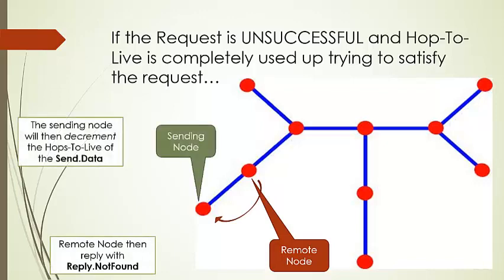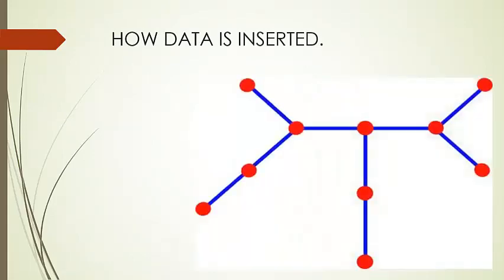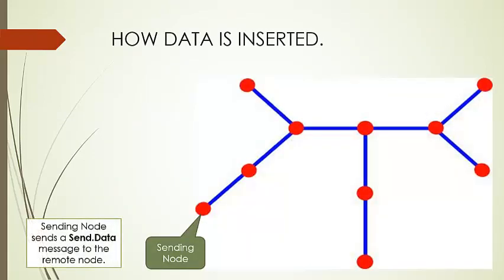Now moving further on how data is inserted, the sending node sends the message consisting of the transaction ID, initial hop-to-live limit, depth counter, and search key.